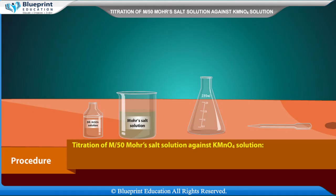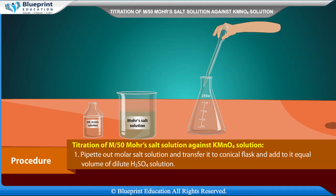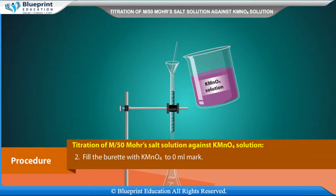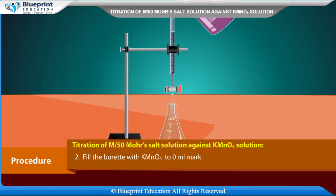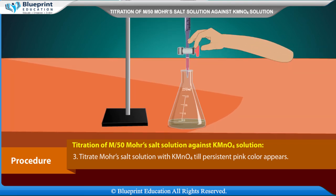Procedure — Titration of M/50 Mohr's salt solution against KMnO4 solution. Pipette out Mohr's salt solution and transfer it to a conical flask, then add an equal volume of dilute H2SO4 solution. Fill the burette with KMnO4 solution to the 0 ml mark. Titrate Mohr's salt solution with KMnO4 until a persistent pink color appears.